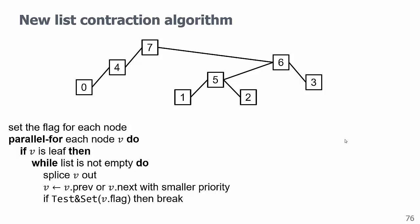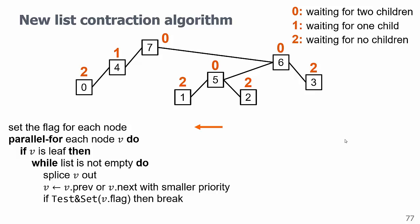We give a flag to each node based on how many subtrees they have, which can be checked locally. Then we make a parallel fork to process each leaf node with flag 2.